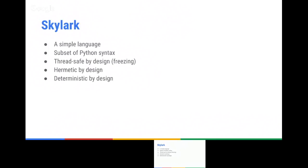All these properties are very important to us because we want reproducible builds. Whenever you build your code, you want to get the exact same result. With Bazel, not everything is fully reproducible all the time because of the execution phase, but at least in the evaluation phase, we have this guarantee.